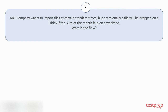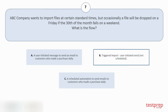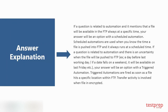Question number seven: ABC Company wants to import files at certain standard times, but occasionally a file will be dropped on a Friday if the 30th of the month falls on a weekend. What is the flow? Options: A) A user-initiated message to send an email to customers who made a purchase daily. B) Triggered import, user-initiated send, not scheduled. C) A scheduled automation to send emails to customers who made a purchase daily. The correct answer is option B. You can refer to the following for the explanation of the answer.